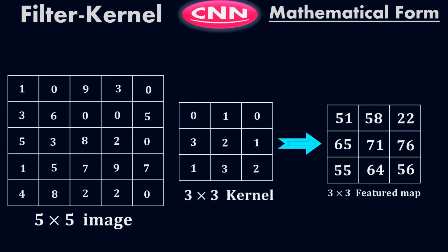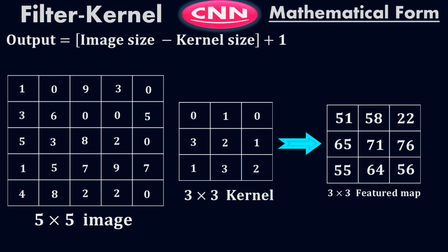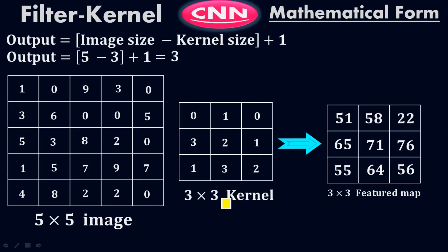There is one more thing — what is the mathematical formula? We can directly derive the dimension of the feature map using this formula: Output = image size − kernel size + 1. It equals 5 − 3 + 1 = 3, which means 3×3. The image size is 5 and the kernel size is 3. So 5 − 3 = 2, and 2 + 1 = 3. This 3 means the dimension of the feature map will be 3×3.